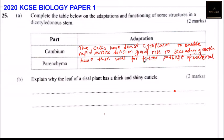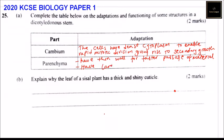As we have seen, parenchyma is used in photosynthesis, storage, and transport. Another adaptation we can mention is that the cells have large, irregular shape for storage.